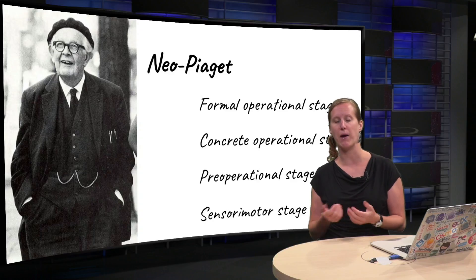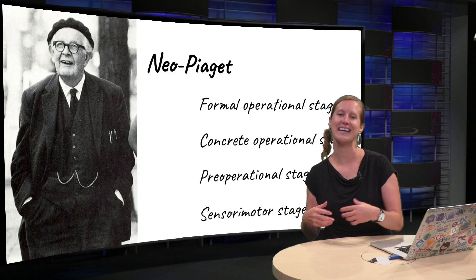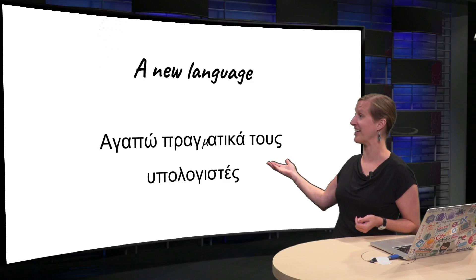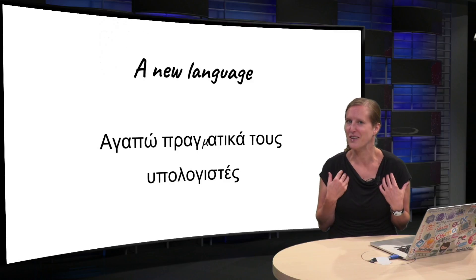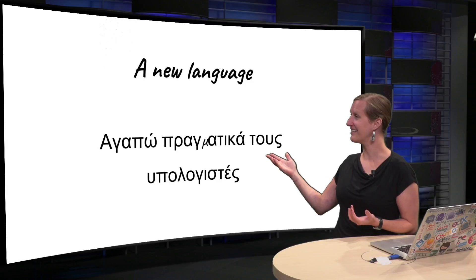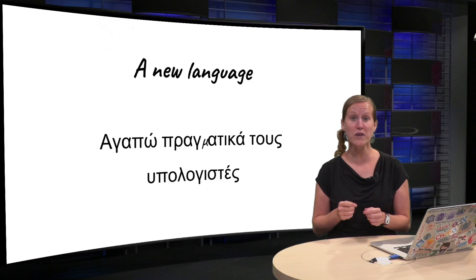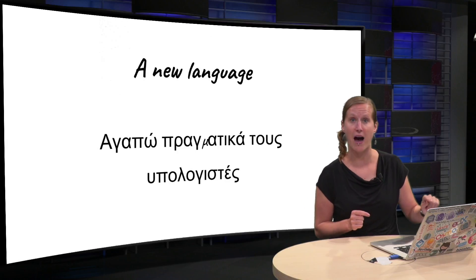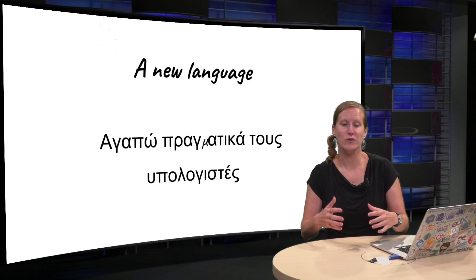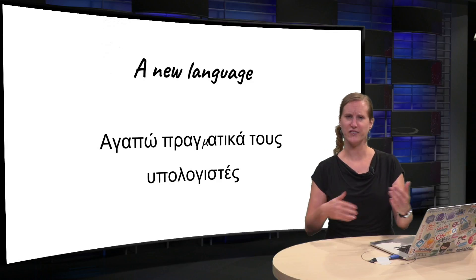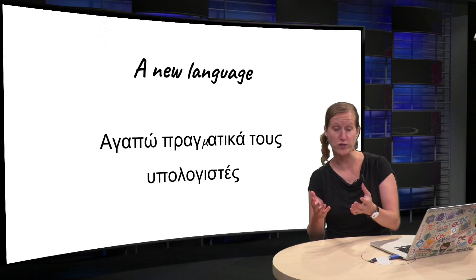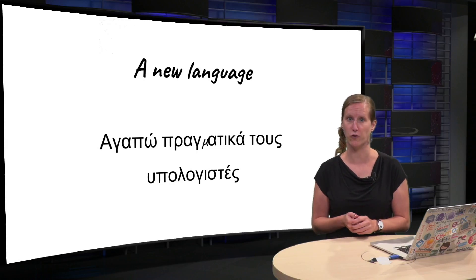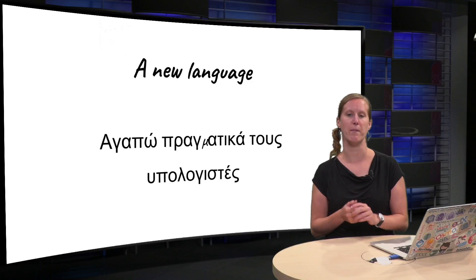The best comparison for learning to program is learning a new natural language. For example, this is a sentence in Greek. If you don't know Greek — I don't really know Greek — I can't reason about this sentence. The only thing I can do is read it letter by letter: an alpha, then a gamma, then a pi. It takes a lot of time; after a while you can read words, then sentences, and it really takes practice to write a complicated piece in Greek yourself. And that's really how programming is too.